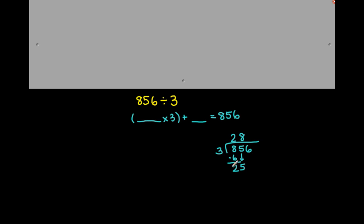Our remainder has to be smaller than our divisor. It has to be, because if it weren't, that means the divisor could go into the number one more time. So the remainder 2 always has to be less than 3. Every time we perform the subtraction, our remainder will always be less than 3. So we say 3 times 8 gives us 24, write 24 below, and 25 minus 24 is 1. Our remainder is 1 — less than the divisor. Then lastly we pull down the 6.